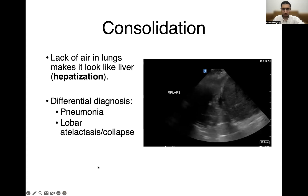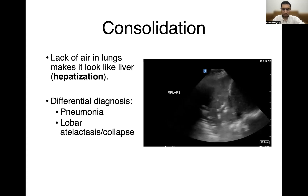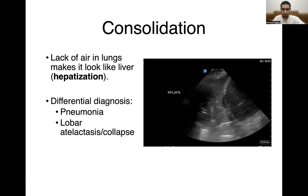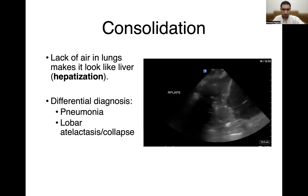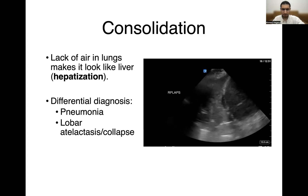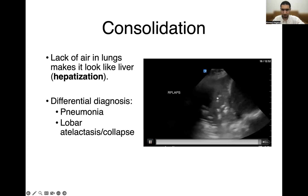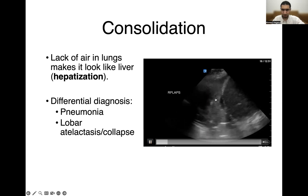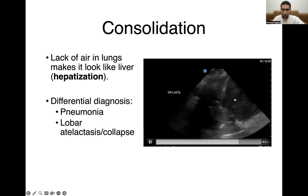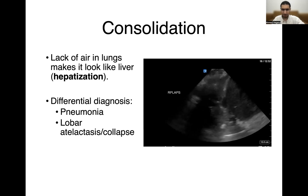First, let's start by defining what consolidation looks like. When lungs lose air, they start becoming consolidated. And when lungs are consolidated, they look like liver. When you look at the image here, you can see very clearly that the lung is looking like the liver lying underneath the diaphragm. This is abnormal. This is consolidated lung.